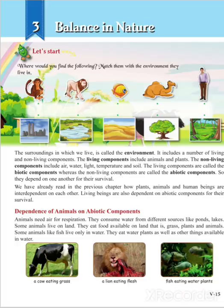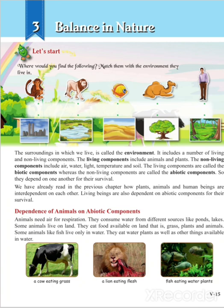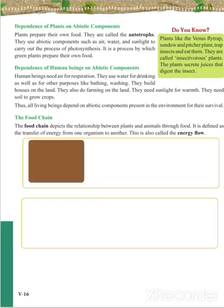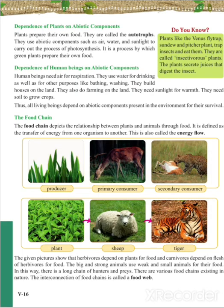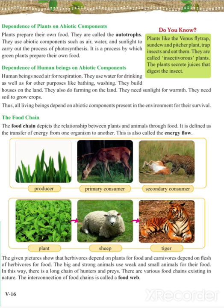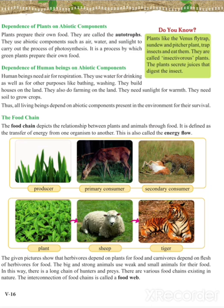Even though plants make their own food, they still depend on abiotic components. Plants prepare their own food, so they are called autotrophs. Plants use abiotic components such as air, water, and sunlight to carry out the process of photosynthesis — the process of making food by green plants. There are also some plants known as insectivorous plants, which eat insects. Plants like Venus flytrap, Sundew, and Pitcher plant are called insectivorous plants.